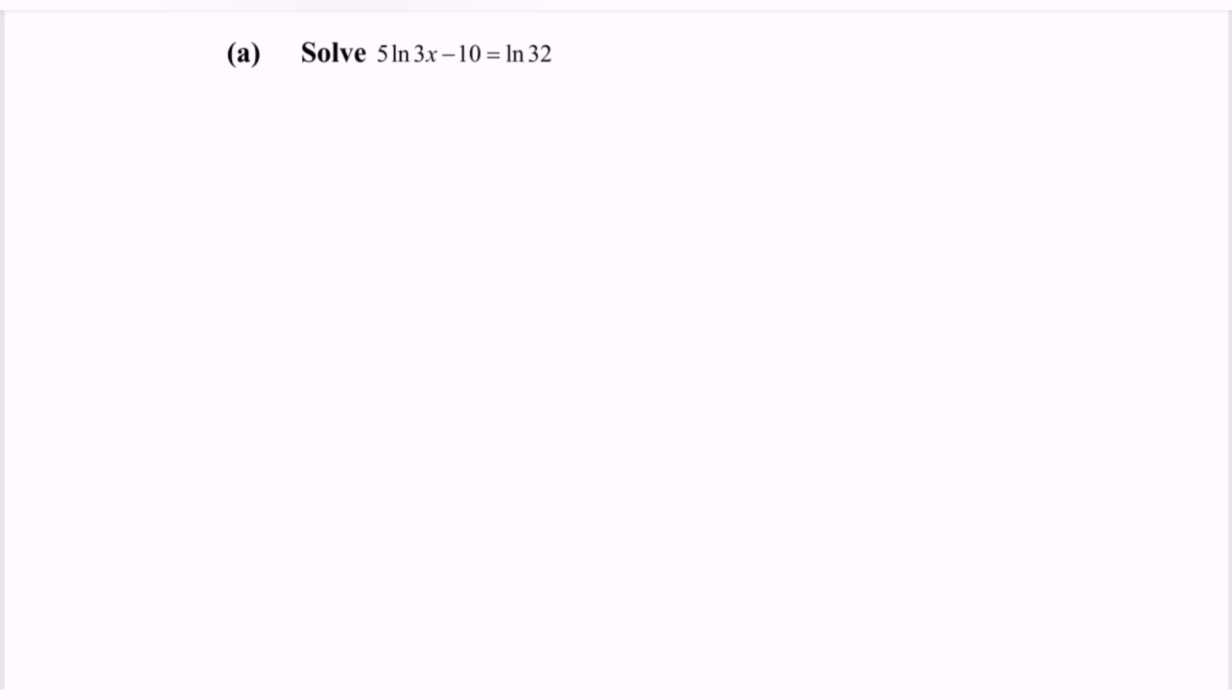To simplify using the properties of logarithms, we can bring the 5 as an exponent: ln(3x)^5 - ln(32) = 10.